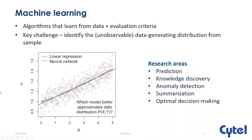Broadly speaking, machine learning is just a set of algorithms and techniques to learn patterns and relationships from data, as well as a set of criteria for evaluating how well these algorithms have learned. The key challenge is that we want to identify the data-generating distribution from a limited sample that we have available to us, and this distribution is usually unobservable. This is a very common inference problem in statistics, where you're trying to identify aspects of the population from a given sample. There's a lot of overlap between statistics and machine learning, but there are also concepts taken from optimization theory that form part of machine learning.